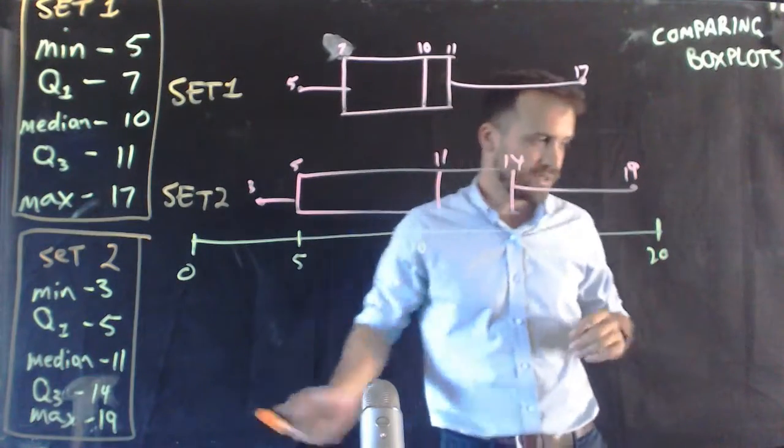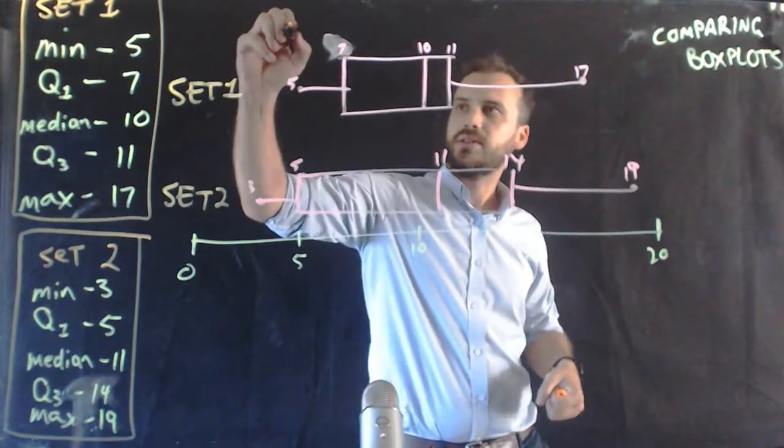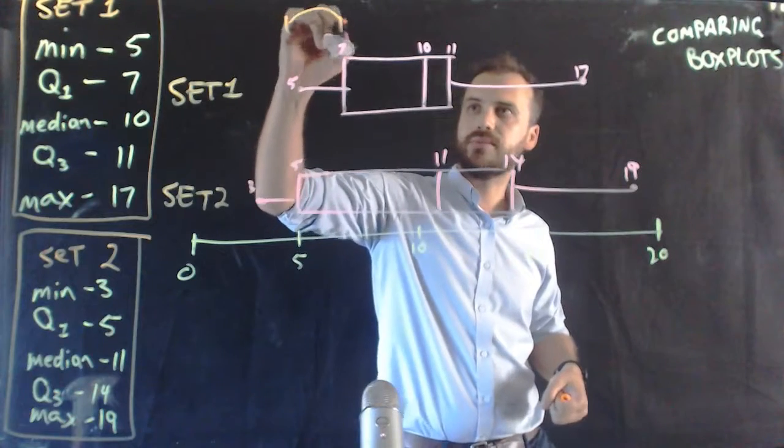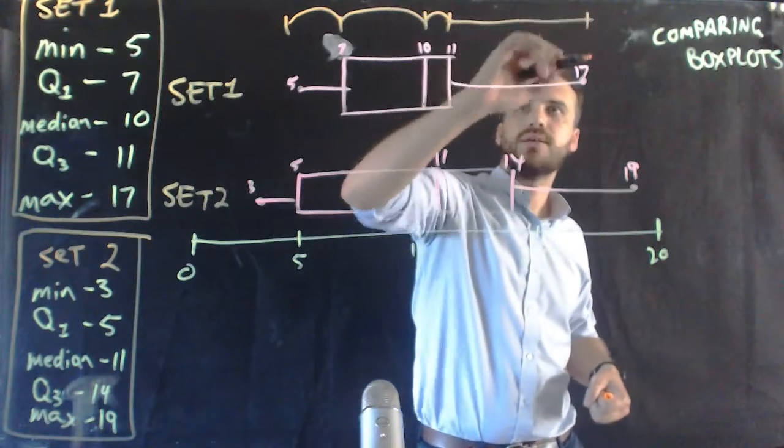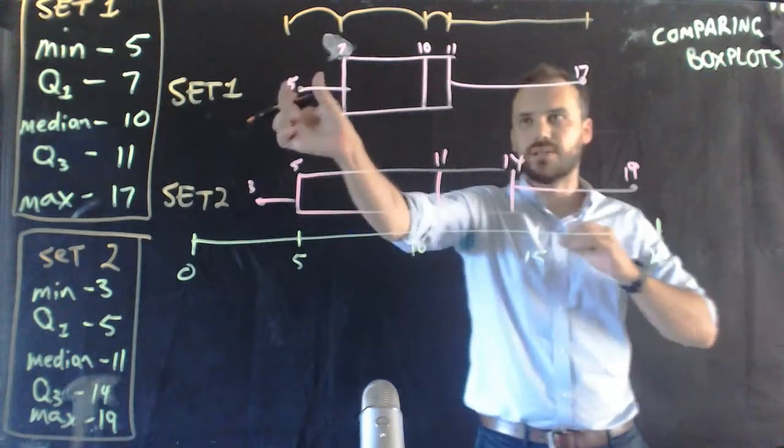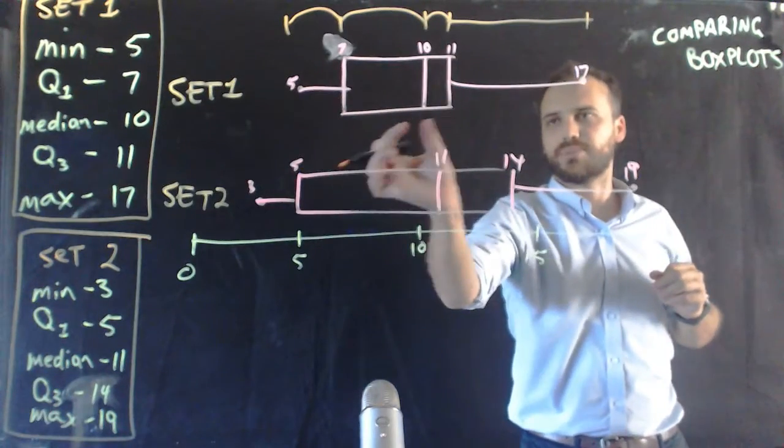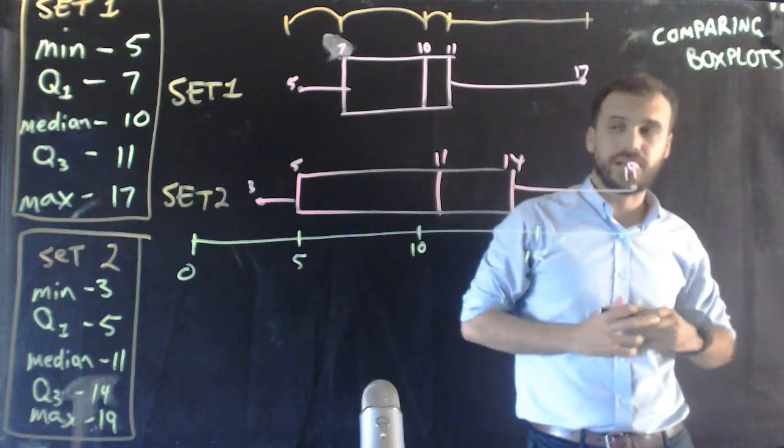Because when it comes to analysing these box plots, this is 25%, this is 25%, this is 25%, and this is 25%. Each one of these parts of our plot represent 25% of the total data.